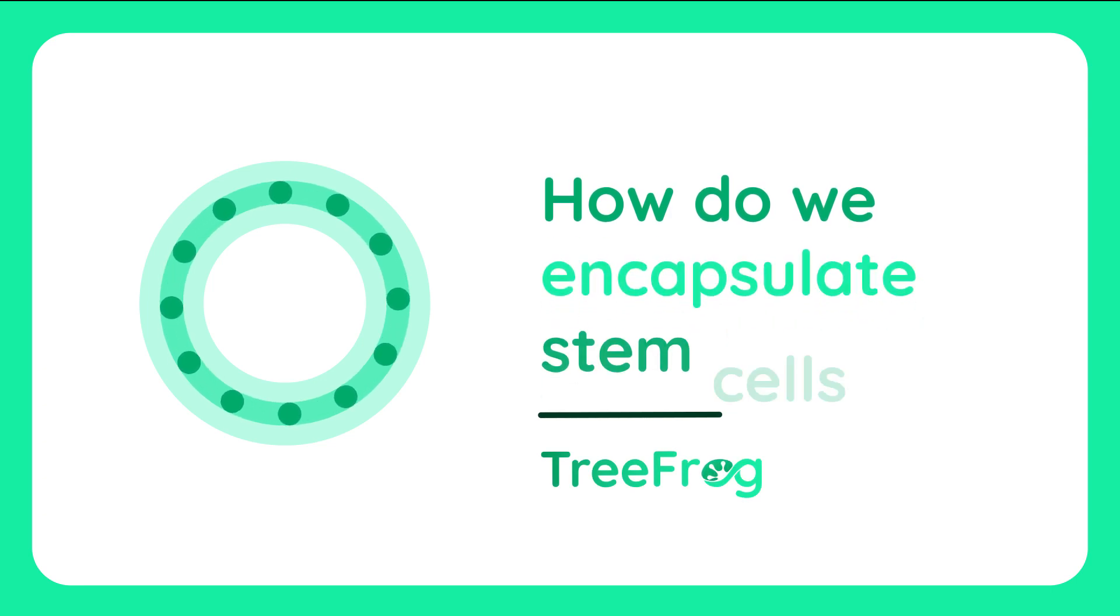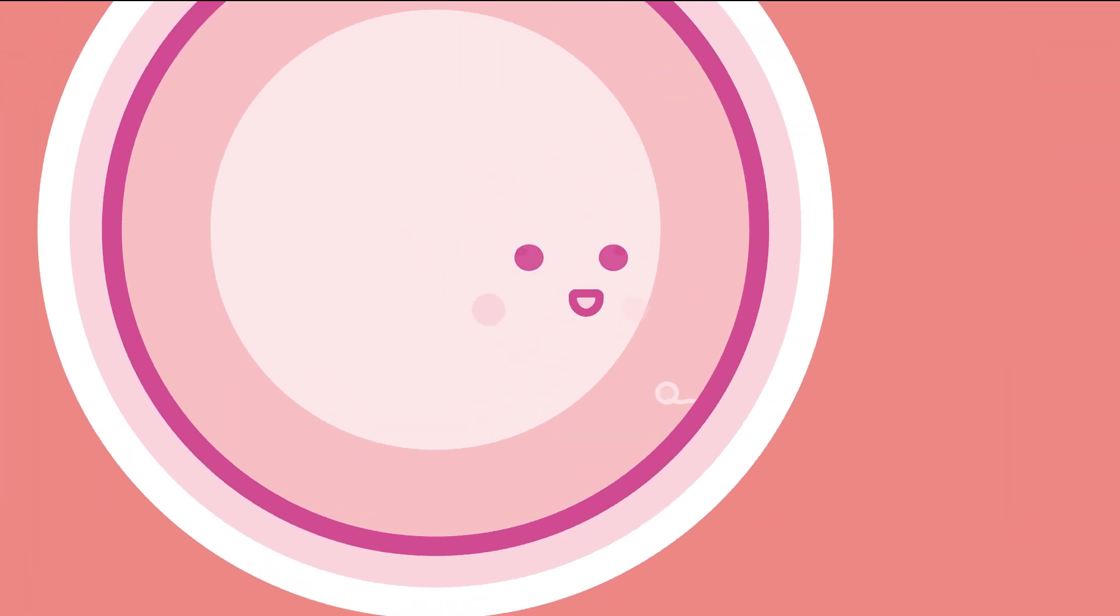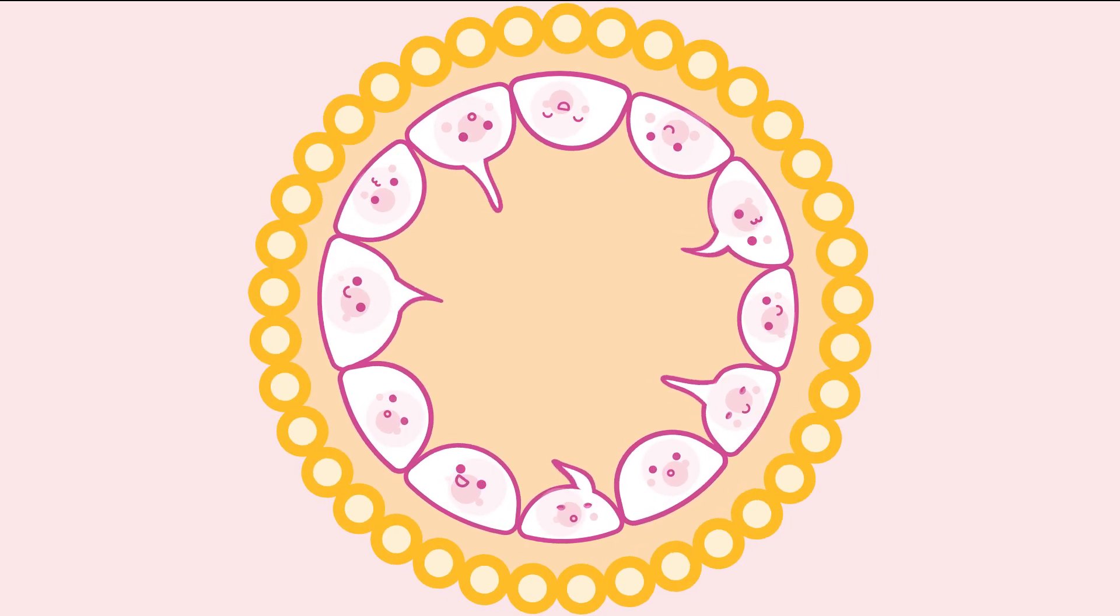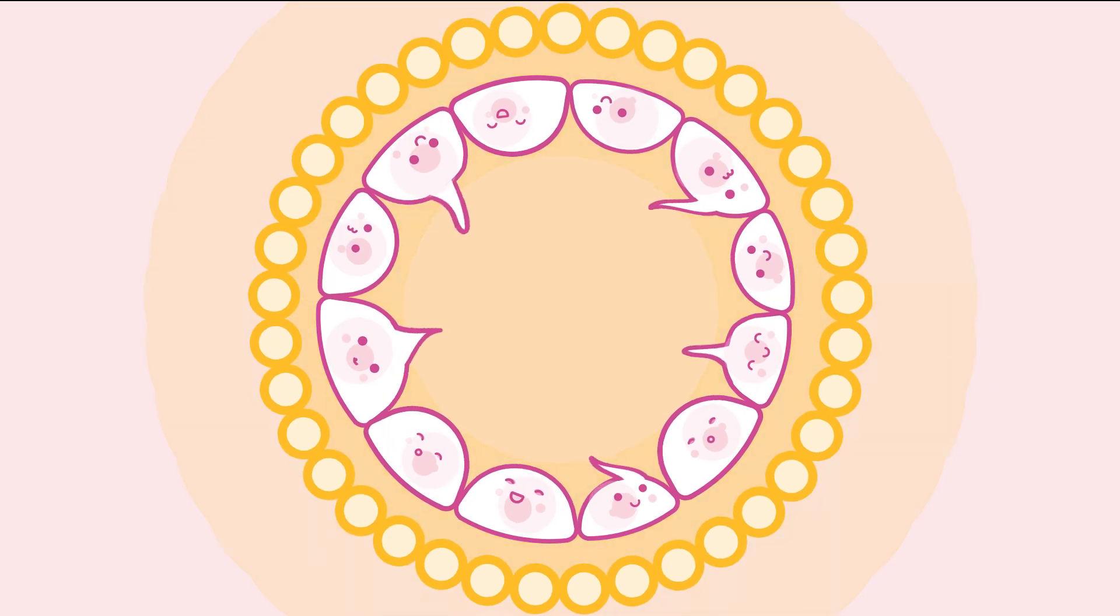How do we encapsulate stem cells? After fertilization, the ovocyte quickly divides to form a 3D aggregate of cells. This embryonic structure is composed of an outer layer which protects the inner stem cells.